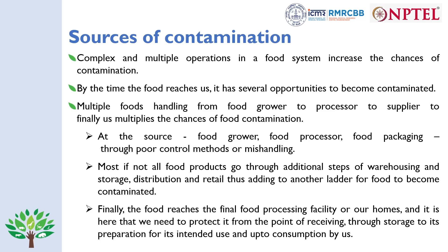Complex and multiple operations in a food system increase the chance of contamination. By the time food reaches us from field to plate, it has gone through several opportunities to become contaminated — through food grower, processor, supplier, packaging, and handling. Most food products go through additional steps of warehousing, storage, distribution, and retail, adding further opportunities for contamination. Finally, the food reaches us at home, where we need to protect it from receiving through storage, preparation, and up to consumption.